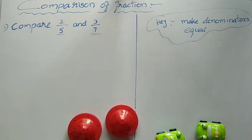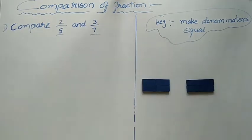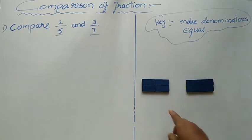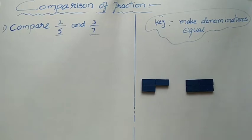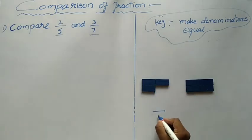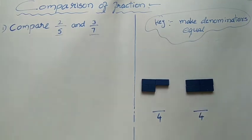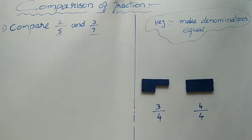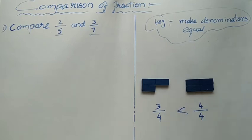Here I take wooden blocks — think that this is one chocolate and this is another chocolate. I ate this part. Now compare these two chocolates: which one is lesser and which one is greater? Obviously everyone can say directly — this one is lesser, this one is greater. Now I will show this in fraction form. Total number of parts is four. I ate one, so remaining is three. So we have 3 by 4 and 4 by 4. Which one is greater? 4 by 4 is greater, and 3 by 4 is lesser.